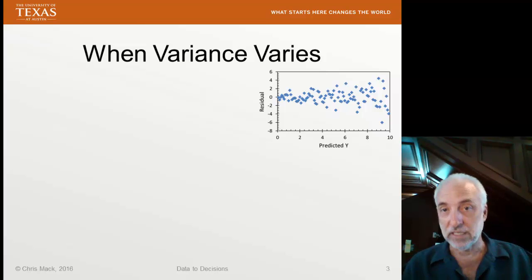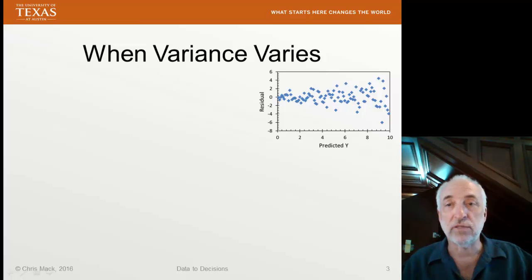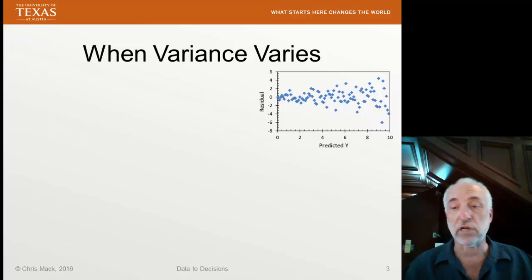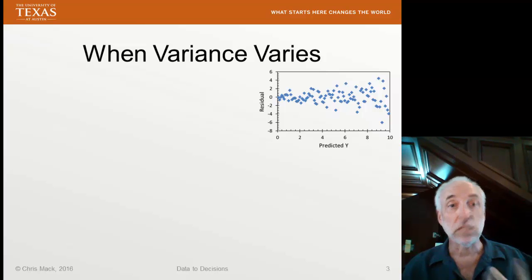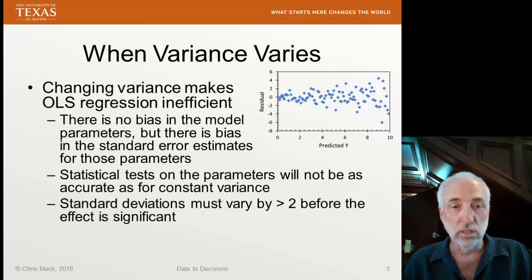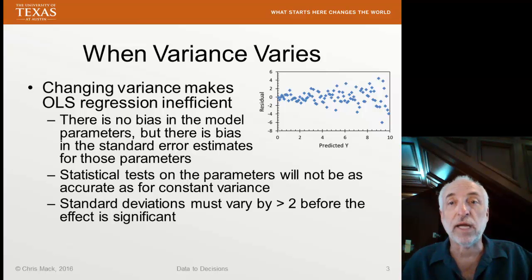This varying of the variance is shown in a graph as a pretty typical megaphone shape, but other shapes of changes in the spread of the residuals — as a function of the predicted y value or of the regressor variables — also need to be dealt with. We're going to show you how to use weighted regression to deal with it. First, let's make sure we understand why we need to deal with it.